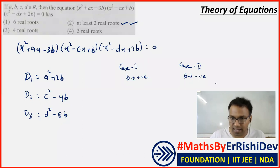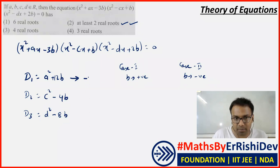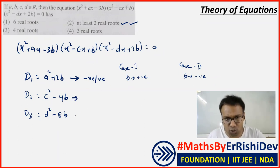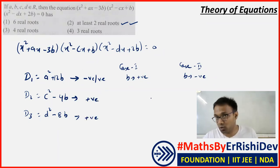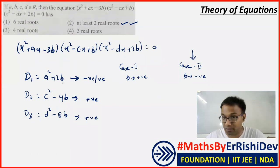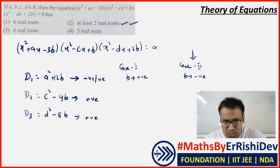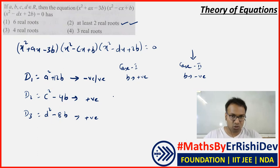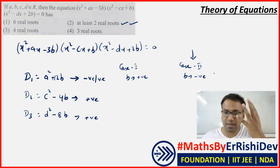If B is negative, then A² + 12B — since B is negative, this becomes A² minus something, so it can be positive or negative depending on values of A and B. But D2 = c² - 4b: since B is negative, minus 4 times a negative = plus something, so c² plus something is always positive. Similarly D3 = d² - 8b: d² plus something is always positive. So when B is negative, D2 and D3 are both definitely positive, meaning at least four real roots.